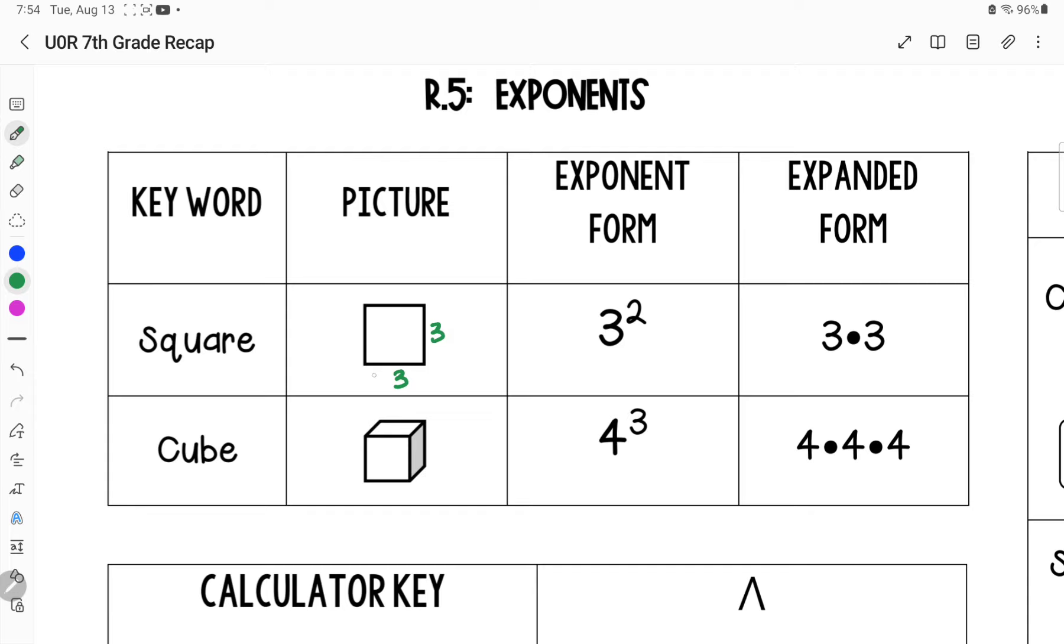A square only has two sides. A cube, if you think of a cube, it has three. So if this was four cubed, that means I have four, four, and four - length, width, and height. Exponent form is going to have my exponent. Expanded form means we've written it out.